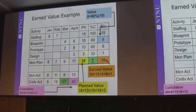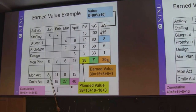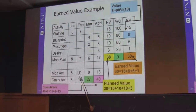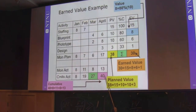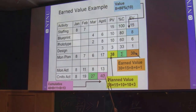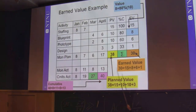The actual cost shows 8 in January, 11 in February, 8, and 30, accumulating to 40 total. So the current status is: accumulated actual cost is 40, planned value is 38, and earned value is 30. What is our situation now and how can we predict the future?